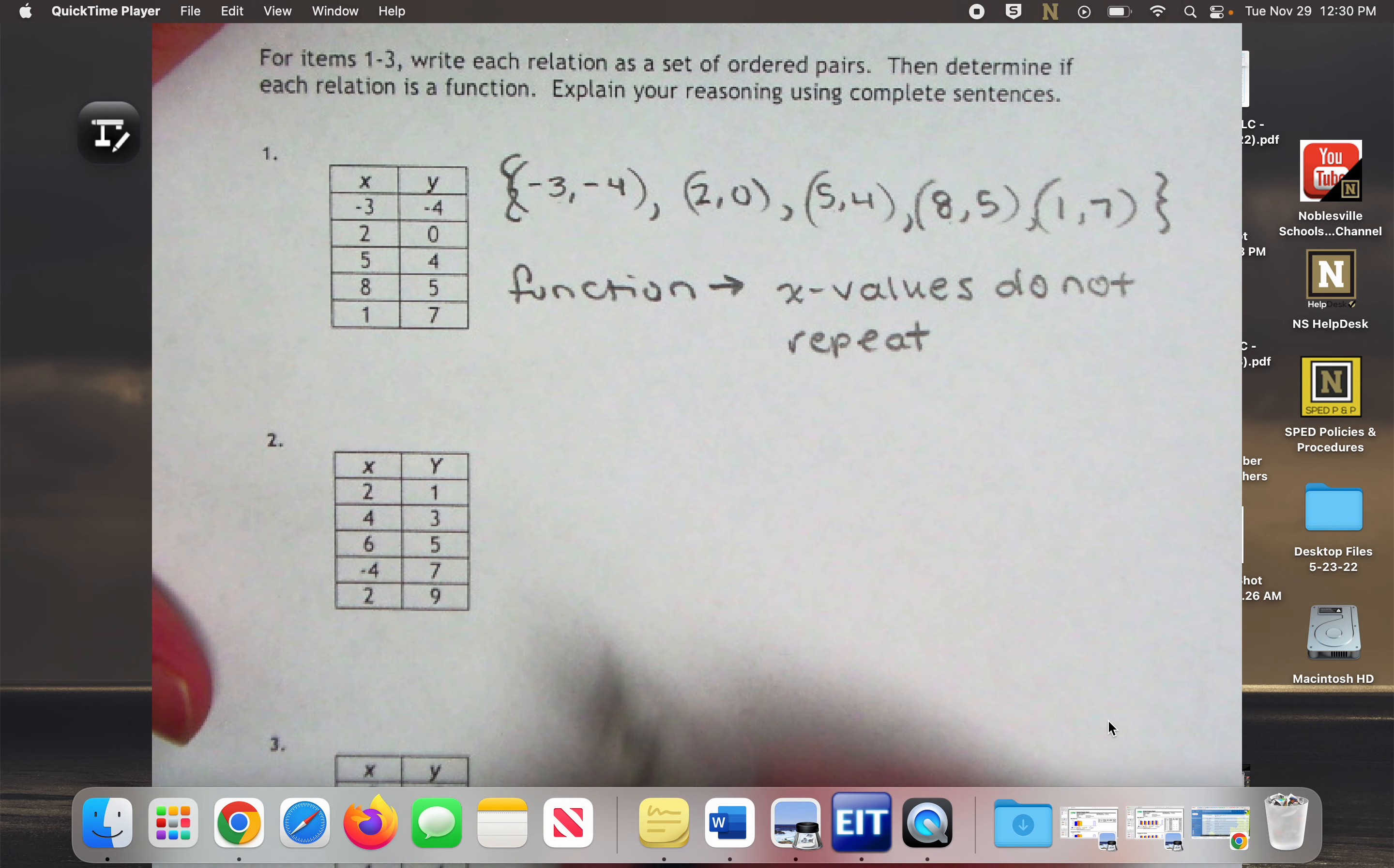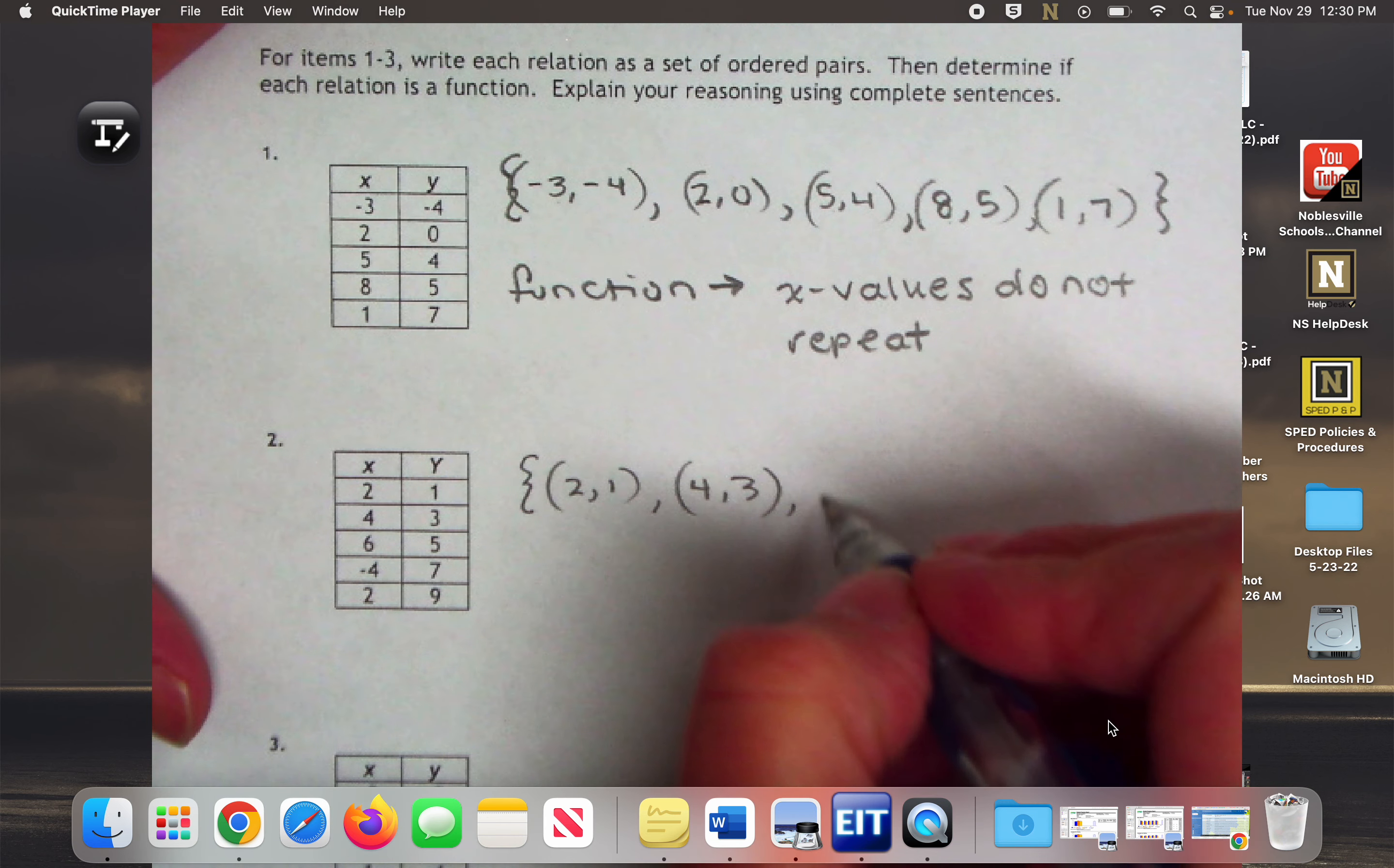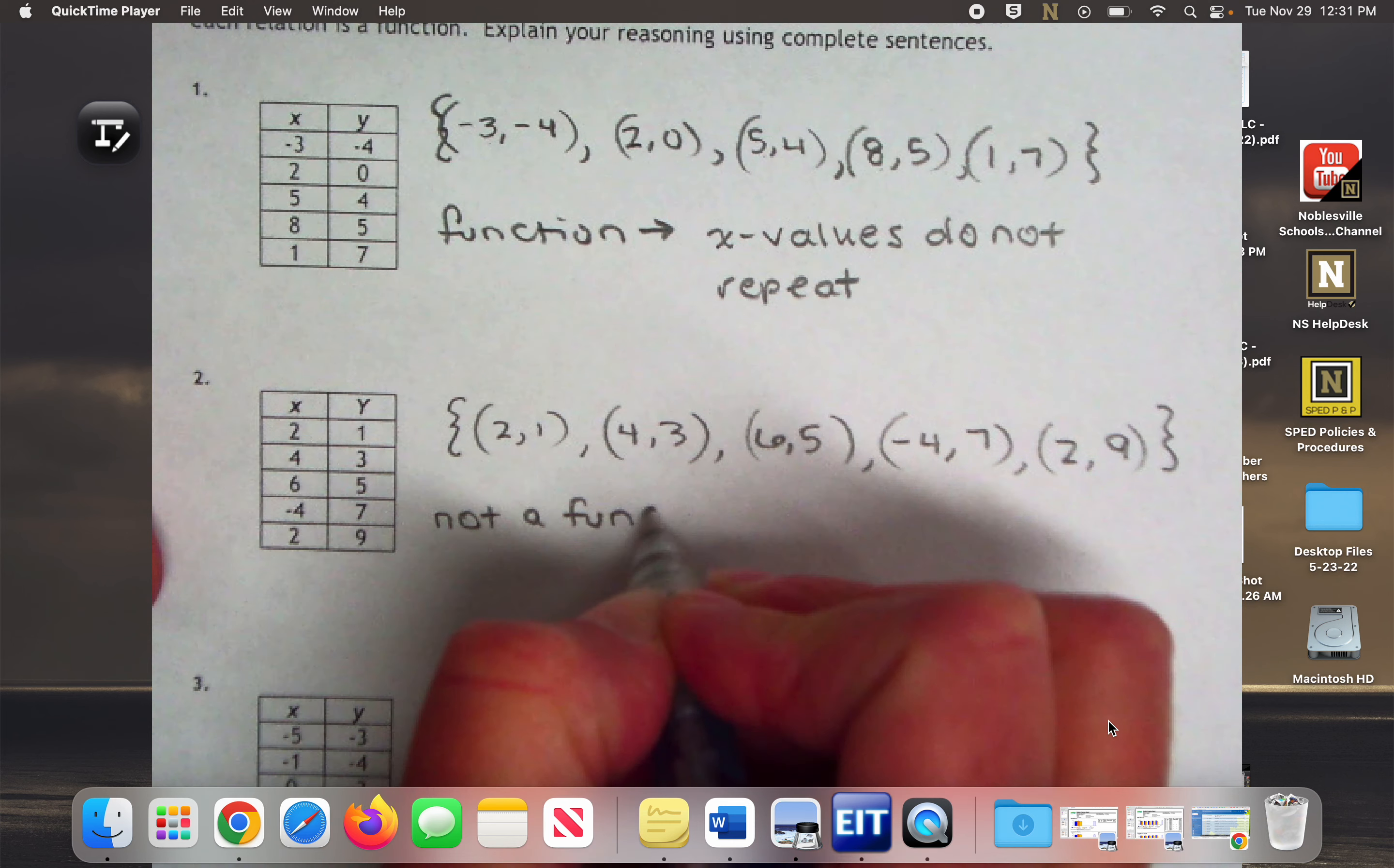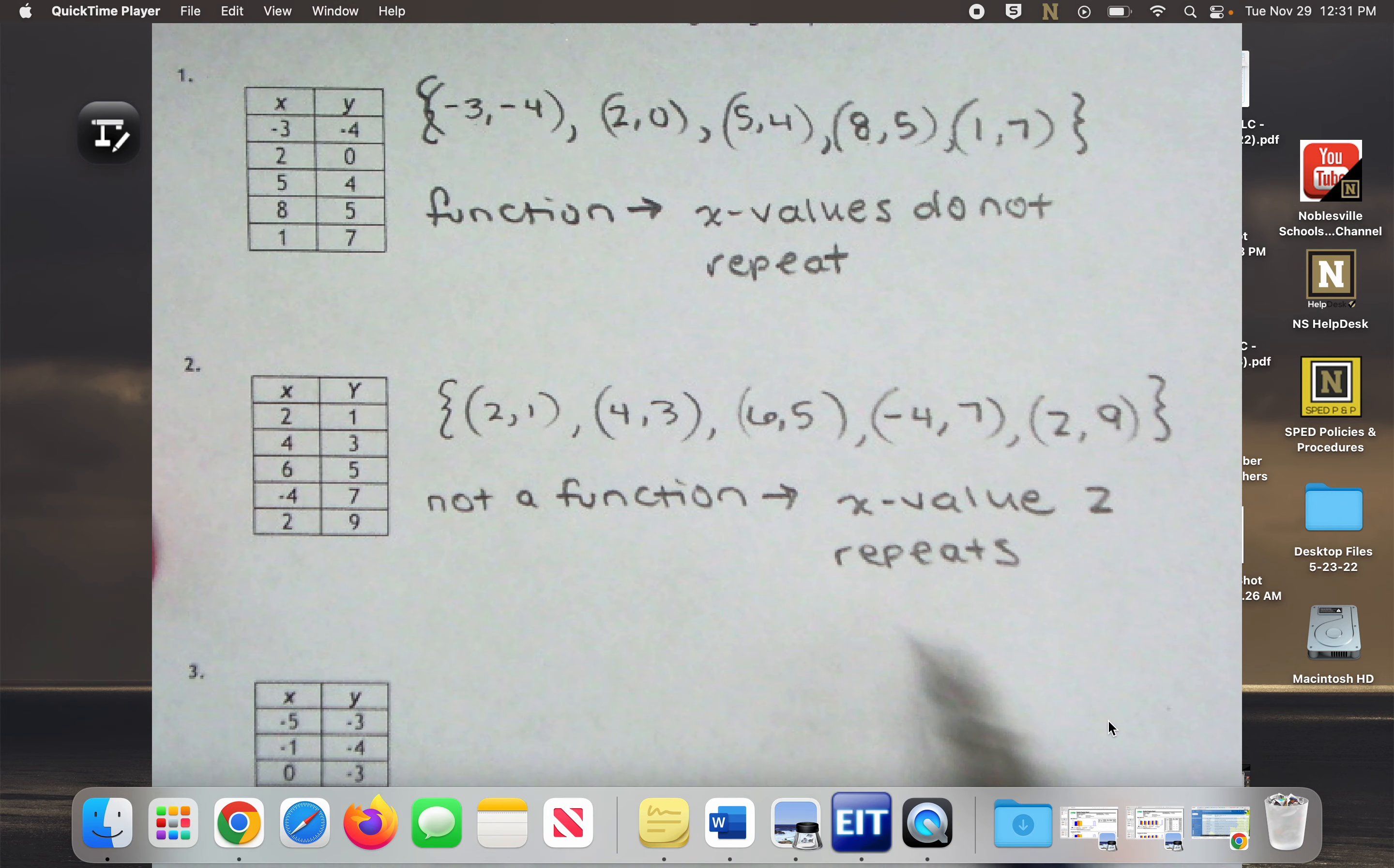Okay. So let's go ahead and look at example two. We've got ordered pair two, one, four, three, six, five, negative four, seven, and two, nine. Excuse me. Is this a function? Silas. Why not? Because two values of two repeats. All right, so you're going to need to be able to tell me if it's a function and then why it is or is not a function.